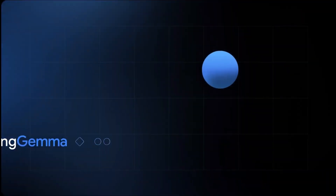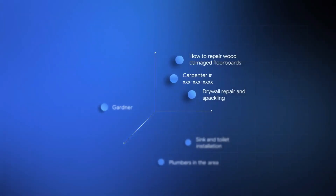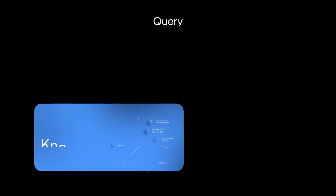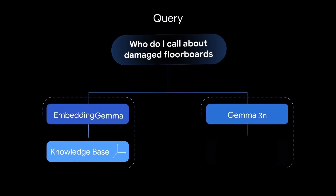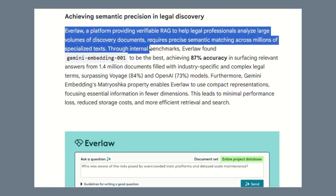Most people think embeddings are just for search, but that's wrong. Embeddings power everything: recommendation systems, content classification, spam detection, customer support.